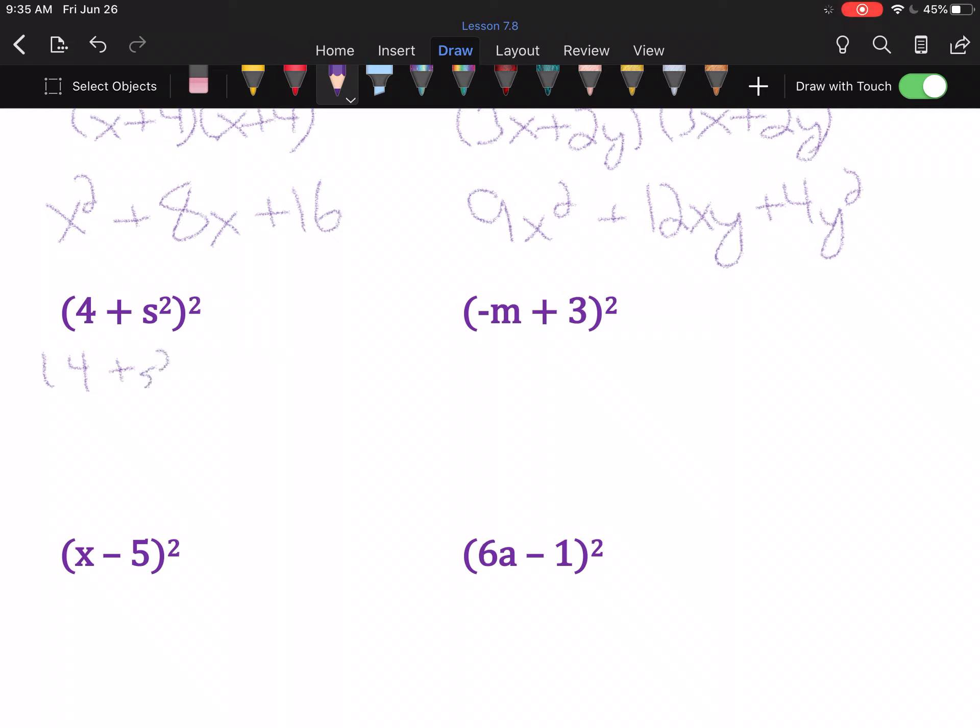(4+s²) times (4+s²). First, 4 times 4 is 16. Outer and inner will be the same thing. So, 4 times s² is 4s². That'll get us two of those. So, that's really going to be 8s² in the answer. And s² times s² is s to the fourth.